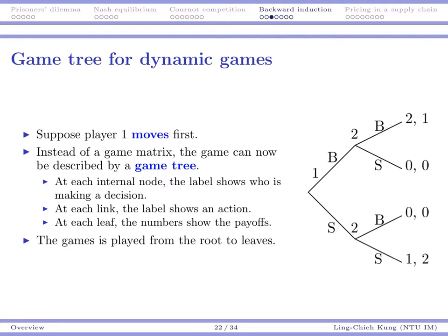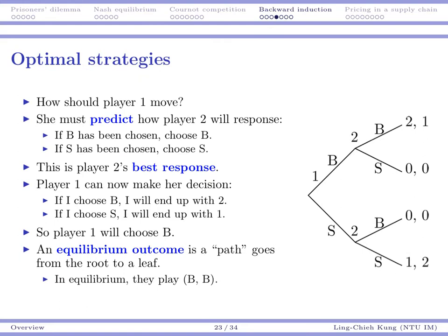And then after both of them have chosen a decision, the outcome will be realized. In this case, player one gets two, player two gets one. Or in this case, they get zero and zero and so on. So the game is played from the root to leaves. If they choose B and S, then get zero zero. That's the idea.